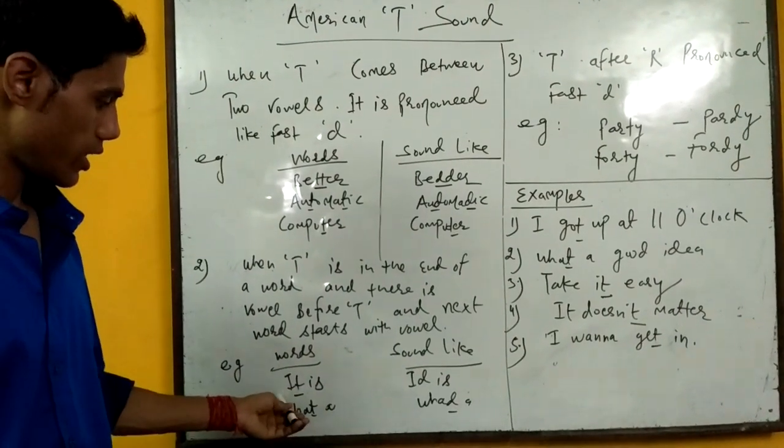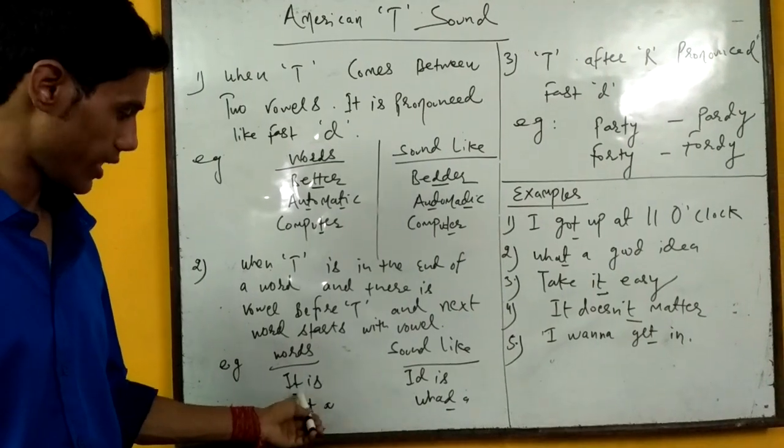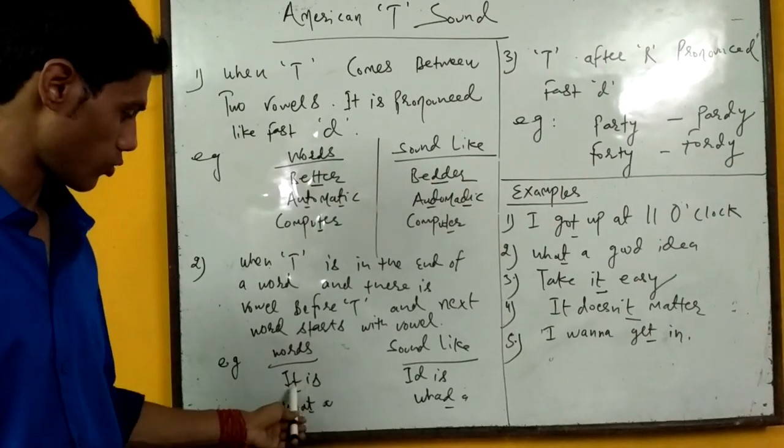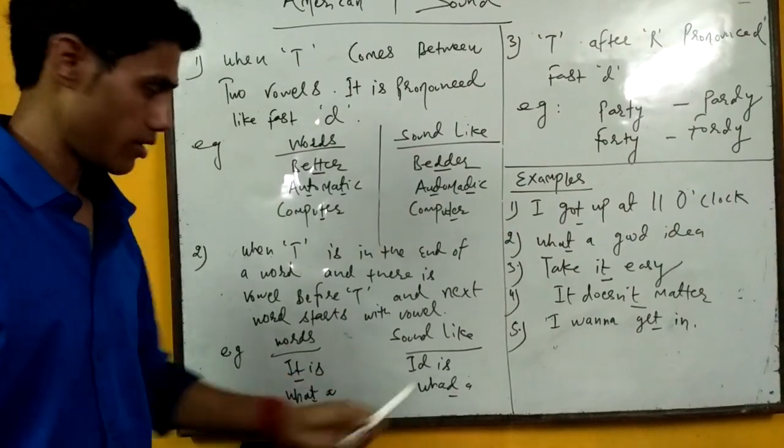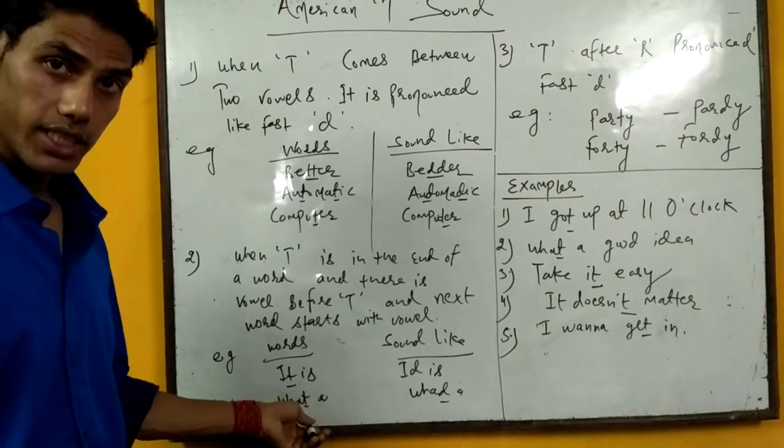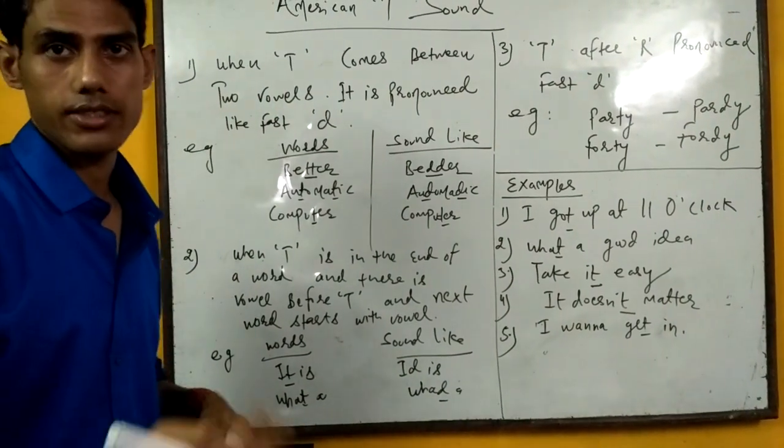Here, words. It is. Here, this word is ending in T and the next word is starting once again with vowel, and there is vowel before T. So we are making this sound here. We are pronouncing it is like it is. American pronunciation like this. It is.